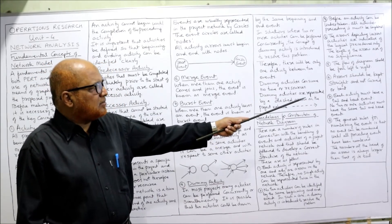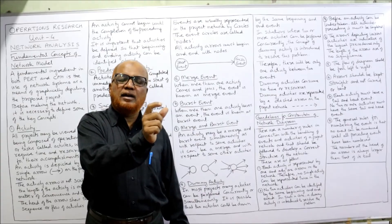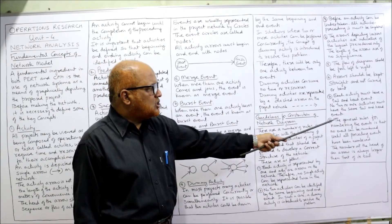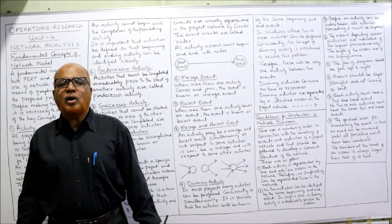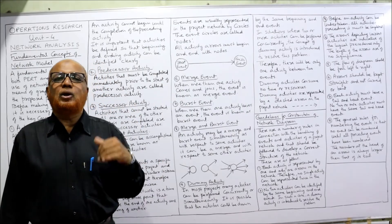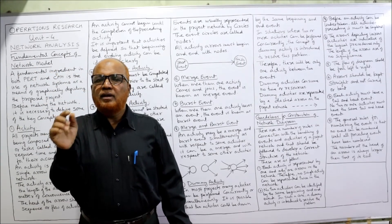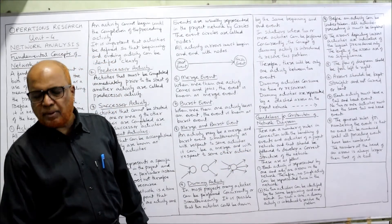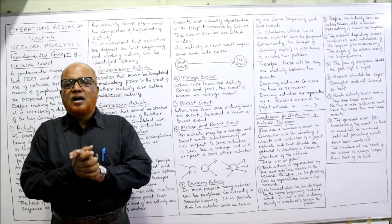Fifth, the flow diagram should always go from left to right — never top to bottom or right to left. Sixth, arrows should be kept straight and not bent or curved. Seventh, each activity must have a tail event and a head event — one beginning event and one ending event for every activity. The general rule for numbering is that no event can be numbered until all preceding events have been numbered, flowing left to right, with the head event number always greater than the tail event number.